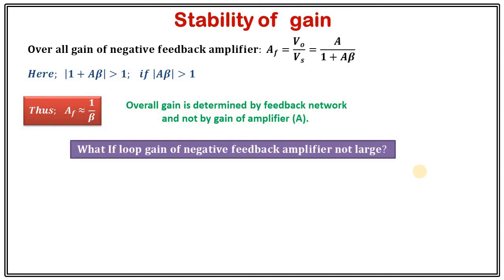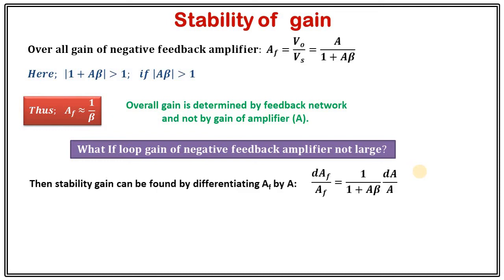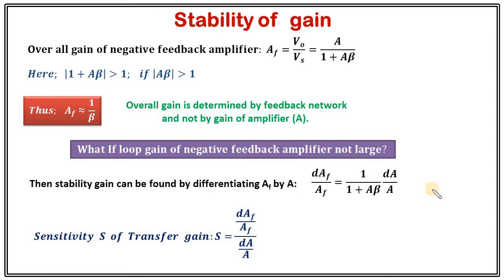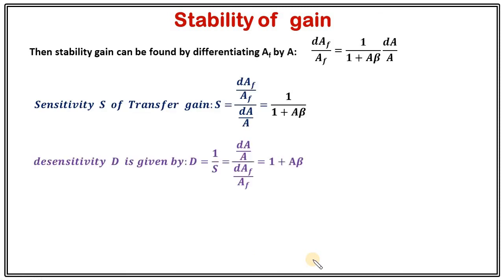But what will happen if the loop gain of the negative feedback amplifier is not large? That means what happens when Aβ is not much greater than 1, and in that scenario we cannot neglect 1 in the denominator. Stability of gain can be found by differentiating AF with respect to A, and from that relation we can define a sensitivity — that is, how much change comes in the gain of the negative feedback amplifier with respect to change in the internal amplifier. Using this relation, we can also define the desensitivity, which is just the inverse of sensitivity: D equals 1 over S.